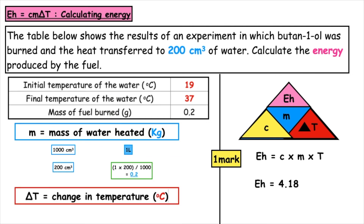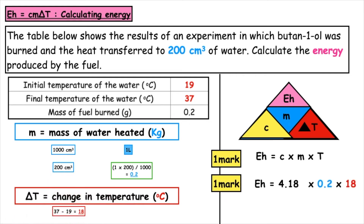This time the table gives us our starting and ending temperatures, so we do a subtraction: 37 minus 19 gives us a change in temperature of 18. That gives us our second mark by ensuring the information is in the correct units. Putting it all into the calculator gives us the third mark — the energy released is 15 kilojoules.